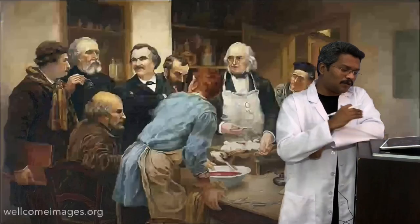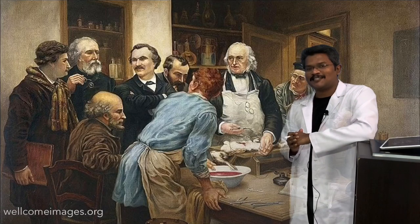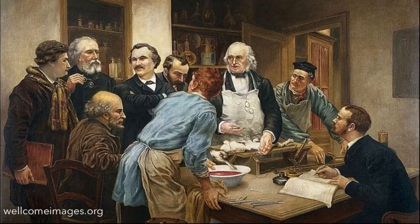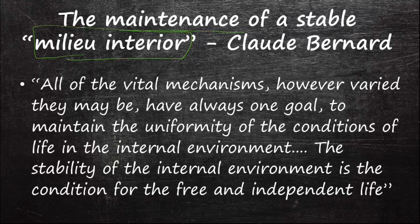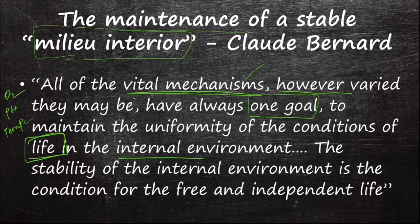This was originally proposed by Claude Bernard, who is called the father of modern physiology. He proposed the maintenance of a stable milieu intérieur — French for internal environment. He said: 'All the vital mechanisms, however varied they may be' — referring to respiration, excretion, locomotion, and all other functions — 'have one common goal: to maintain the uniformity of the conditions of the internal environment,' meaning oxygen level, pH, temperature, and glucose.